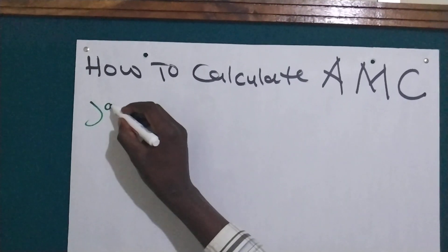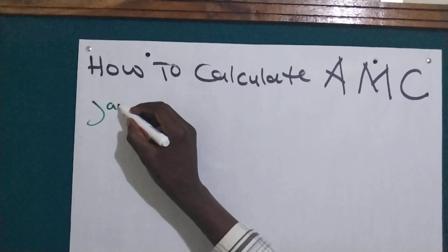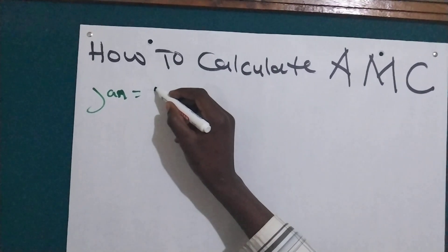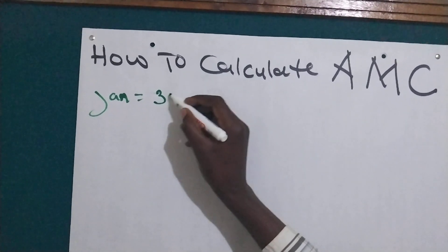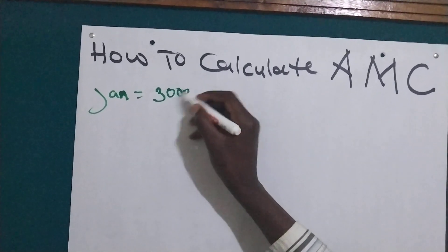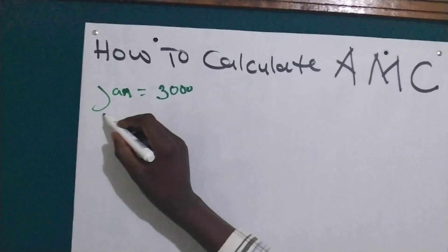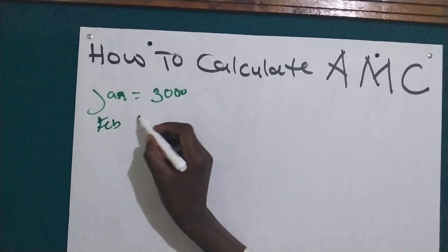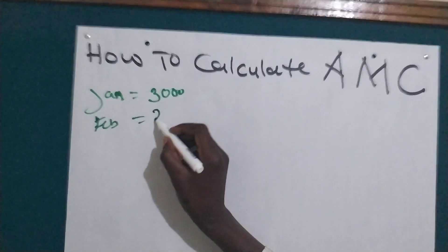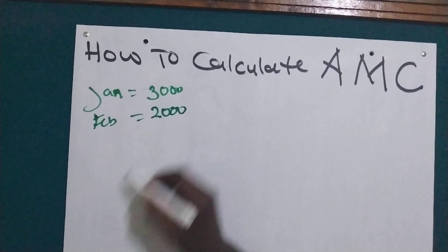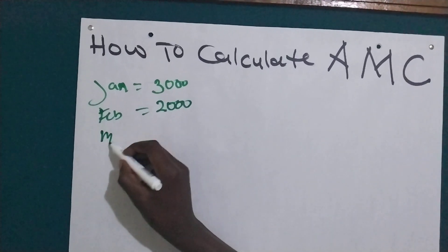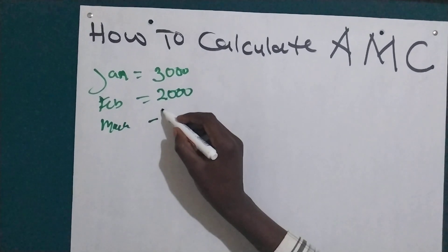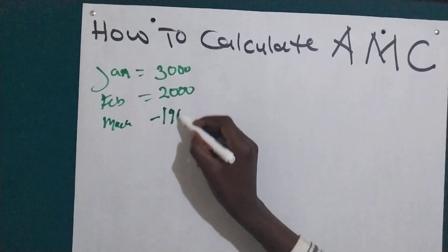Imagine that in January you consume 3000, and then in February you consume 2000, and then in March you consume 1900.